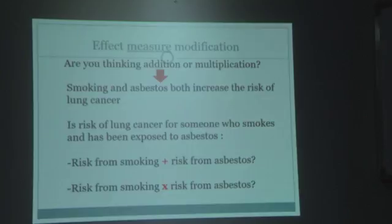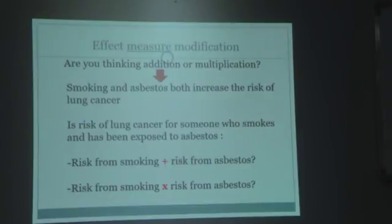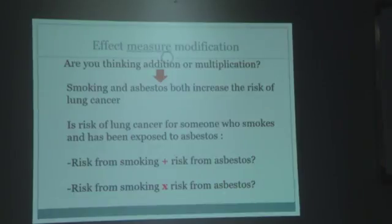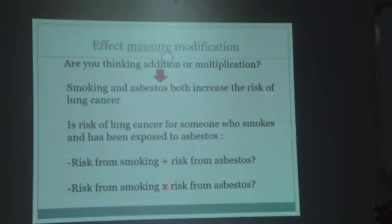If it is on a multiplicative scale, the risk of smoking on lung cancer multiplies when we add asbestos. For example, the risk due to smoking may be two, and when you add the asbestos factor, it becomes six—it has tripled, it has multiplied three times. That is effect modification on a multiplicative scale. But if it only increases from two to 2.3, that is just a small additive increase—it has not doubled or multiplied; it is on the additive scale.